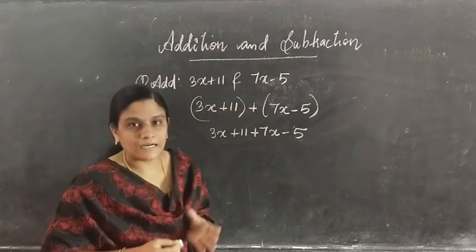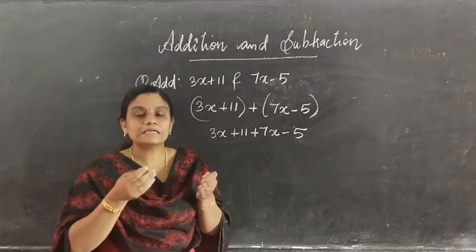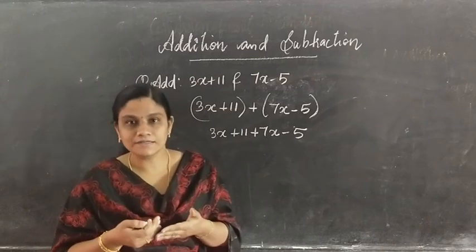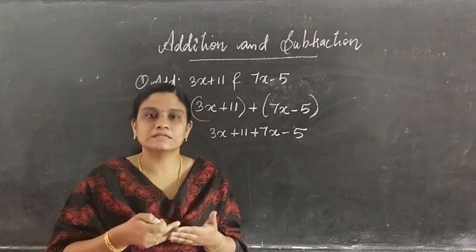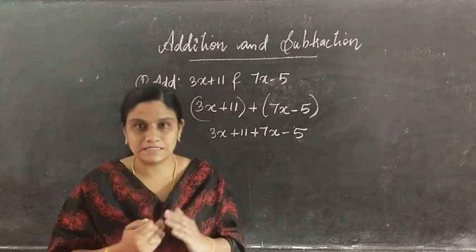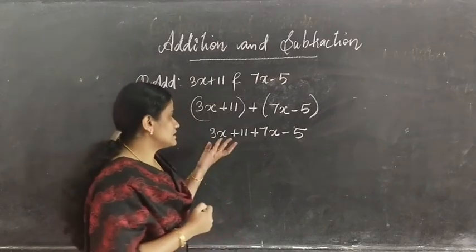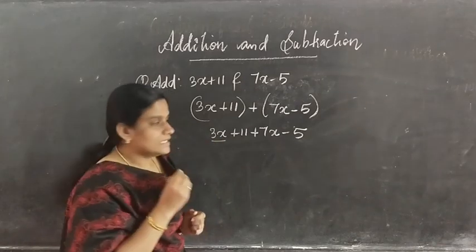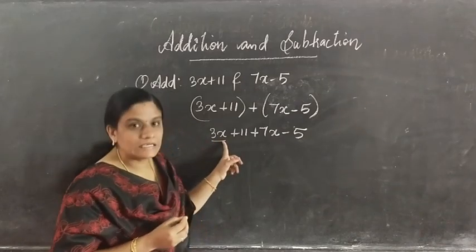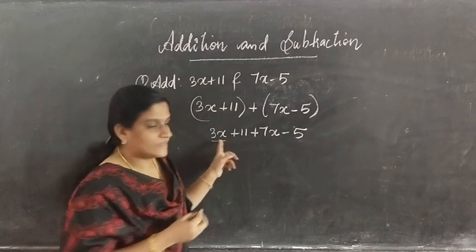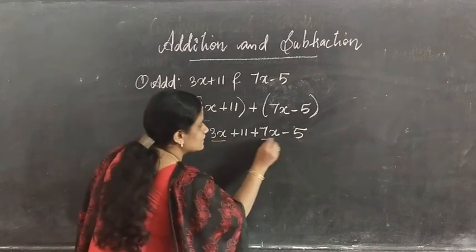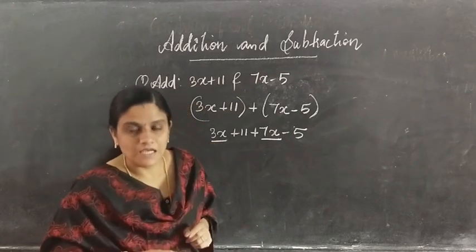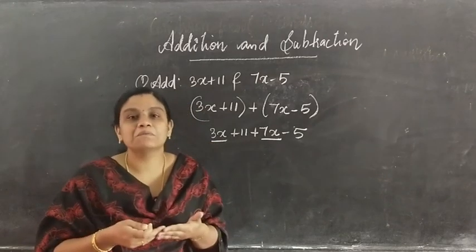Now, how to add: like terms are added and unlike terms are left as they are. The first term is 3x. Is there a like term for this 3x? Yes — 7x. So 3x and 7x are like terms, and like terms can be added.